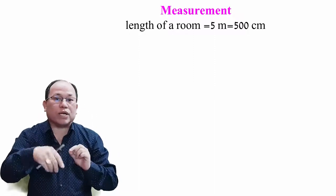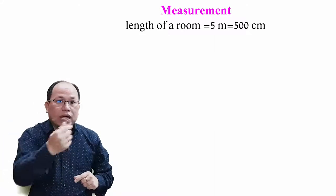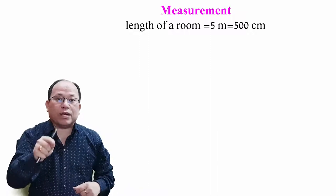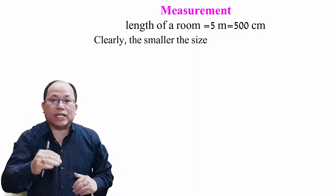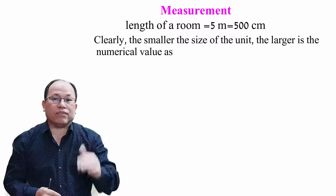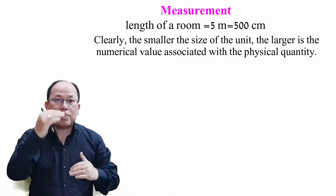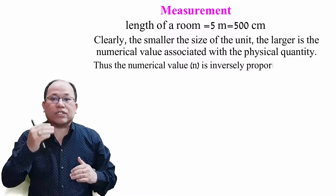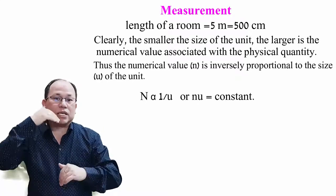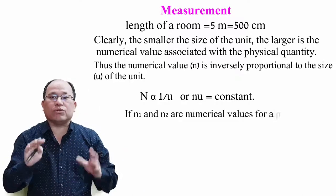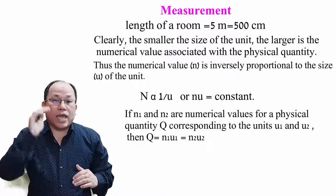For example, the length of a room is 5 meters or 500 centimeters. Meter is a bigger unit, so the numerical value is smaller. The numerical value N is inversely proportional to the size U of the unit. If N1 and N2 are numerical values corresponding to units U1 and U2, then Q = N1·U1 = N2·U2.